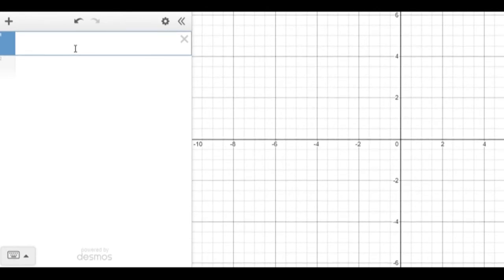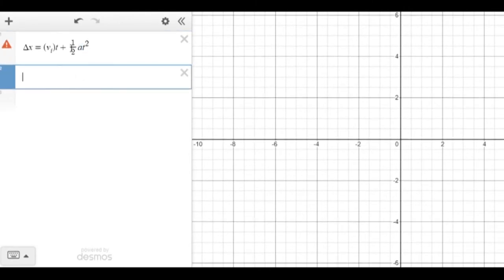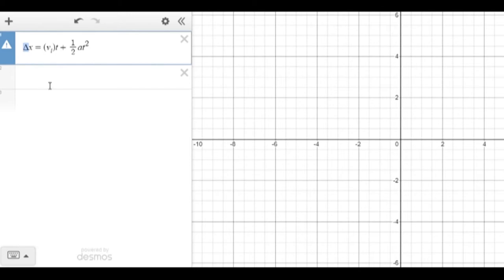So the only other piece of prior knowledge that we're going to need to have is this equation. Change in x is equal to initial velocity times t plus one-half acceleration times time squared. This equation is true given that we have a constant acceleration and we're dealing with some sort of one-dimensional particle motion. So we're just going to keep that in mind because we're going to use that later. We've got this error sign because Desmos doesn't understand the delta symbol, and we're going to come up with a way to counter that.